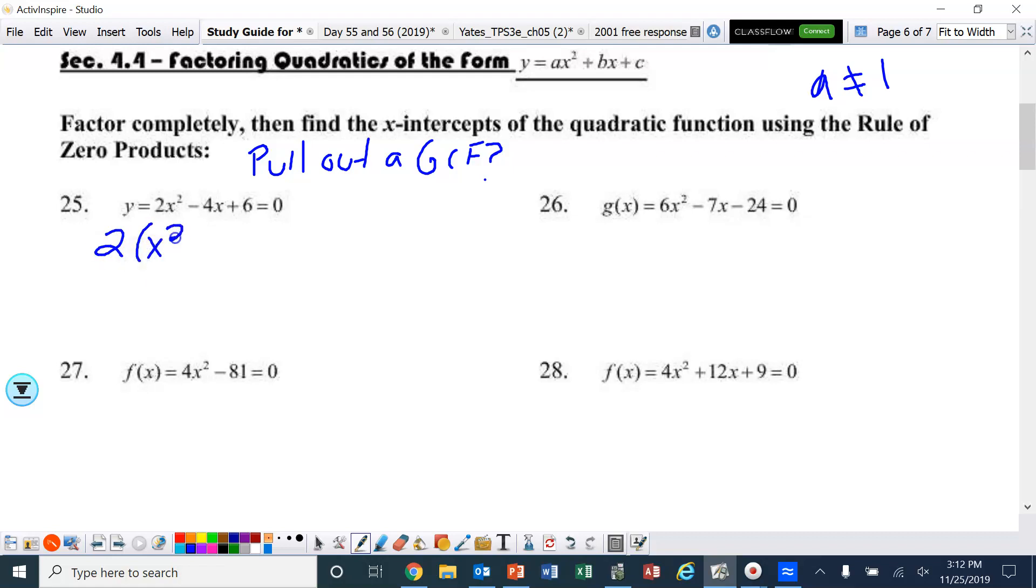So we're going to pull out a 2. All right, so when I pull out the 2, I'm left with x squared minus 2x plus 3 inside. And now I want to see if I can factor that. So let's see. Well, factors of 3 that would add up to a negative 2. I can't think of any. There are only two factors of 3. That's 1 and 3, but they're supposed to add up to negative 2. So I think we're done. So we can't do anything more to this one. Okay, so this ends up being our final answer. All we can do to that one was pull out a 2.